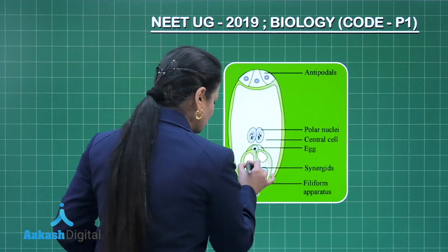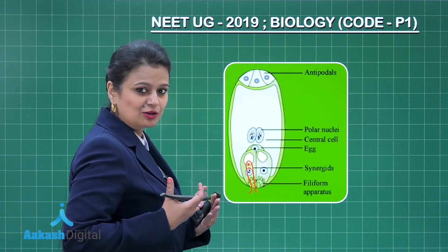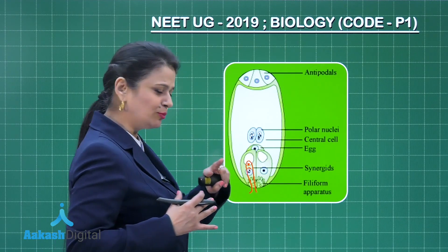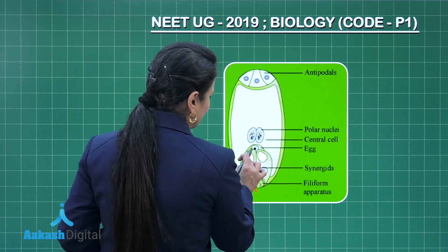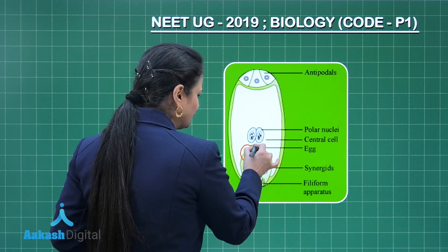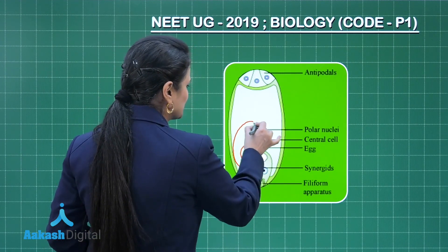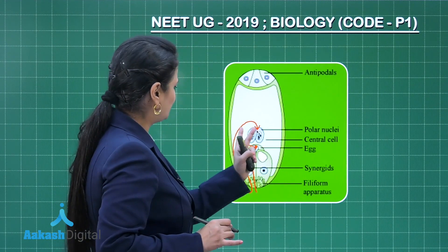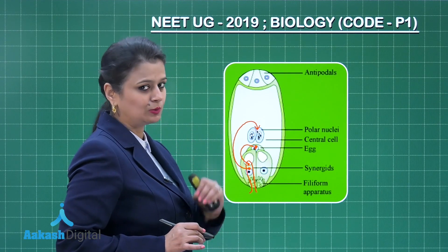Inside the pollen tube, two male gametes are present along with the vegetative cell nucleus. These male gametes are non-motile. The pollen tube bursts and male gametes are released in the synergid. Out of the two male gametes, one fuses with the egg to form a zygote, and the other fuses with the two polar nuclei.